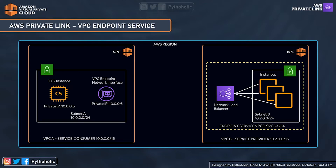On the producer side, we also have a VPC. The instances here are appliance instances that host the service. One important component that makes the link possible is the network load balancer, which receives requests from service consumers and routes them to your services. To create a VPC endpoint service, you need a network load balancer. If you want your service to be consumed, you need to create a service endpoint using the VPC endpoint service option, configuring it using the network load balancer, and you can also have a private DNS for that.